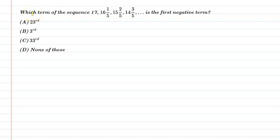Hello students, first of all let us understand the question. The question is which term of the sequence 17, 16 1/5, 15 2/5, and 14 3/5 is the first negative term.